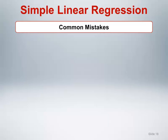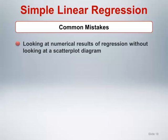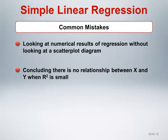Chapter 33 in Motulsky discusses a number of common mistakes made in simple linear regression. A very common and often tragic mistake is to perform a simple linear regression and examine the numerical results without looking at a scatterplot diagram. It is critical to perform a graphical exploration of the data to determine if linearity is a reasonable assumption and to look for potential outlying values. Another common mistake is to conclude that there is no relationship between X and Y when the R-squared value is small. Low R-squared values can result from the presence of outliers or from a curvilinear relationship between X and Y. A further common mistake is to extrapolate beyond the data, which can result in conclusions that are not supported by the data and cannot be replicated in future studies.